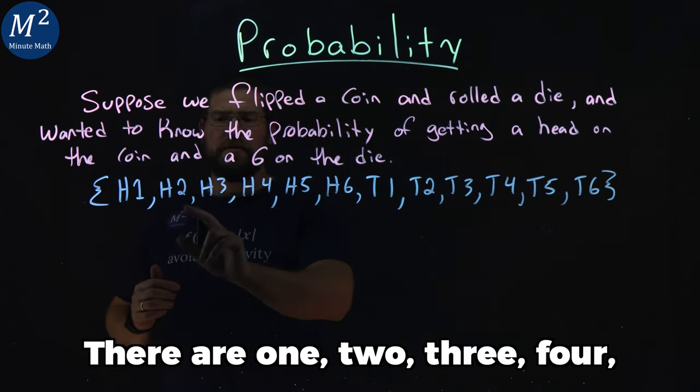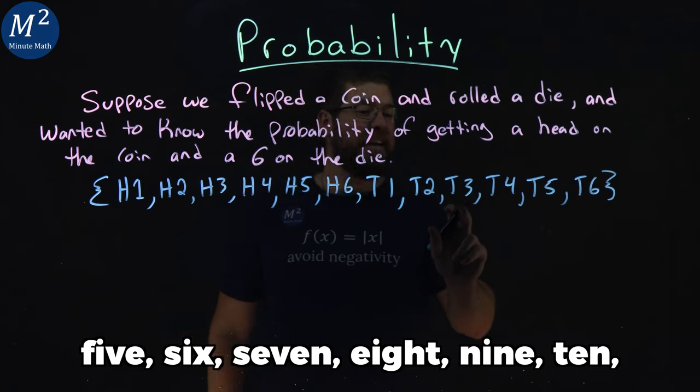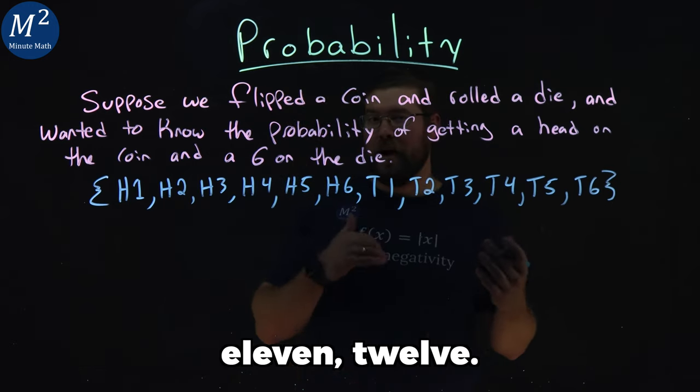And so there are one, two, three, four, five, six, seven, eight, nine, ten, eleven, twelve possible options.